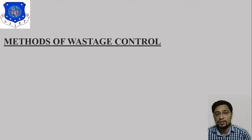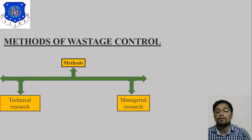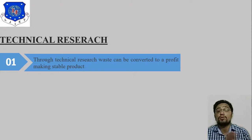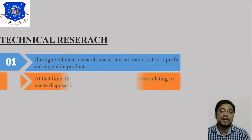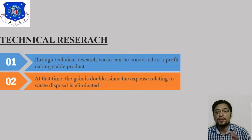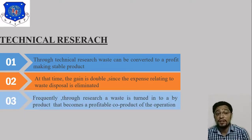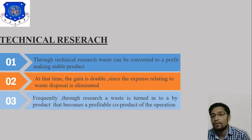The next method of waste control is technical research. Through technical research, waste can be converted into a profit-making stable product. The gain is double since the expense relating to waste disposal is eliminated. Frequently, through research, waste is turned into a product that becomes a profitable co-product of the operation.